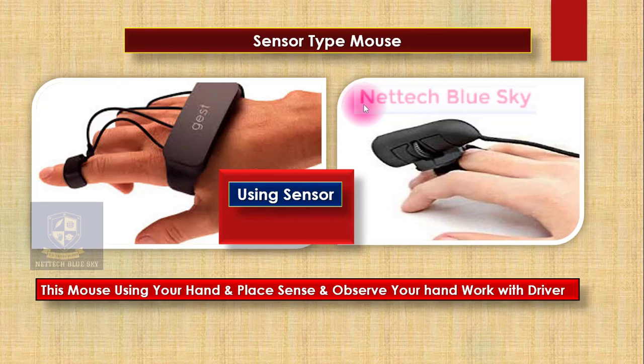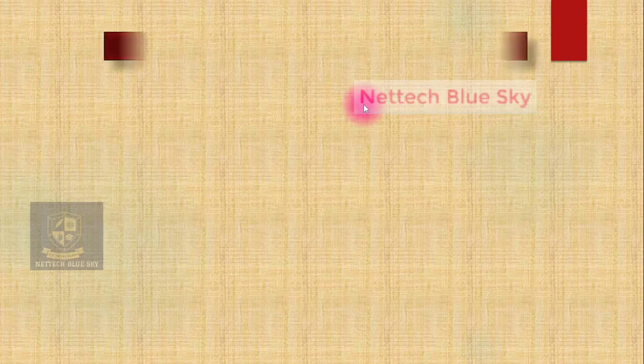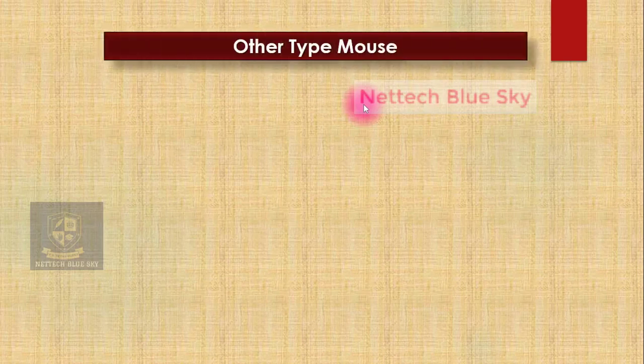Sensor type mouse uses your sensor and your fingering sensor systems — this is very important for your computer. Next time I will show you another type of mouse, a new different generation type mouse. How these other types of mouse work with your computer.